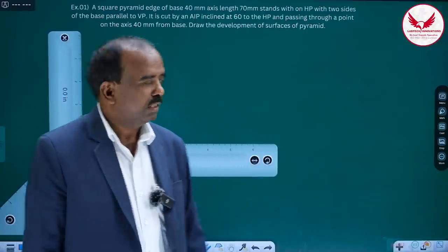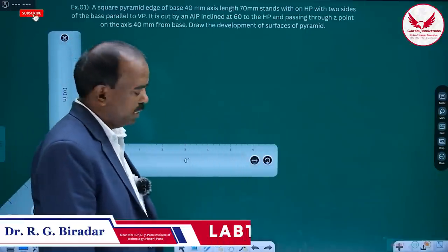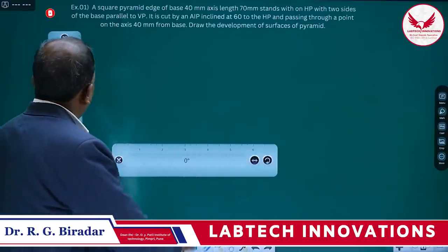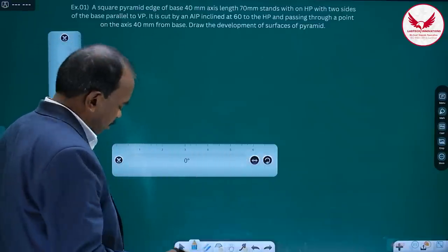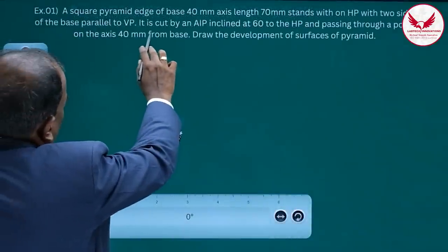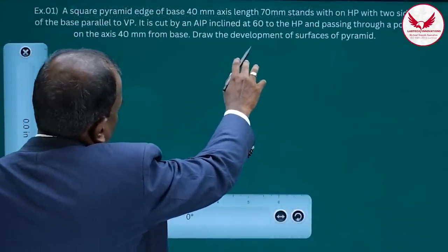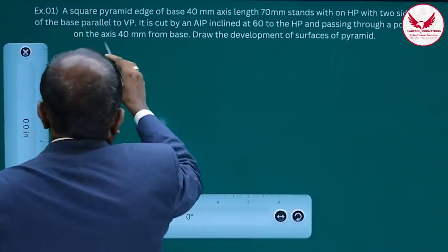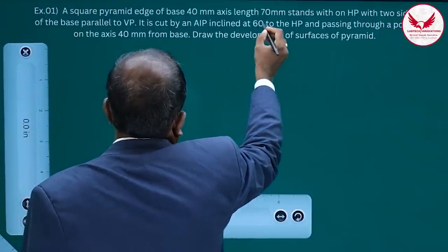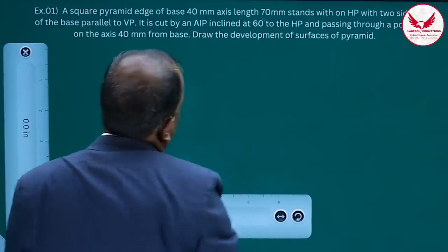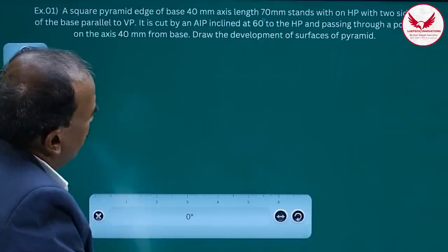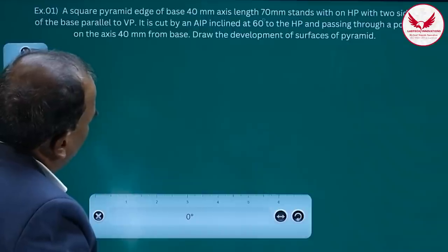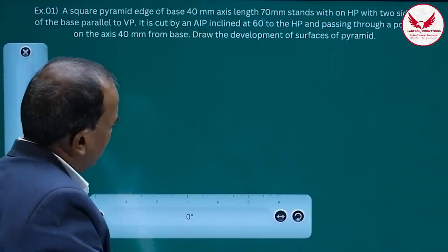Hello friends, today we will see the development of lateral surfaces of solids. The first example is the development of a lateral surface of a pyramid. The problem: a square pyramid with edge of base 40 mm and axis length 70 mm stands on HP with two sides of the base parallel to VP. It is cut by an AIP inclined at 60 degrees to the HP, passing through a point on the axis 40 mm from the base. Draw the lateral surfaces of the pyramid.